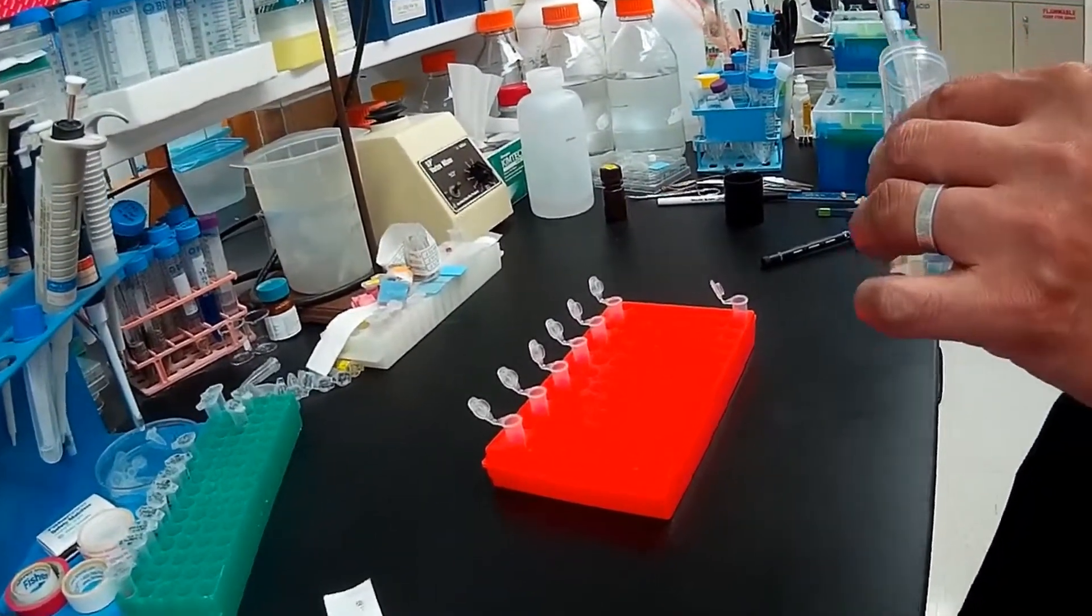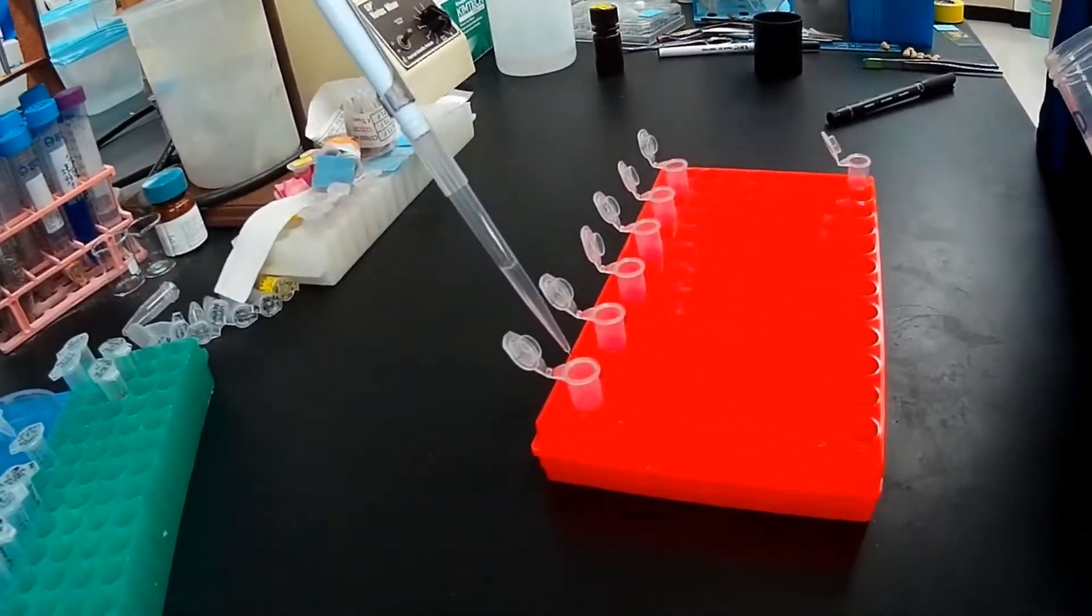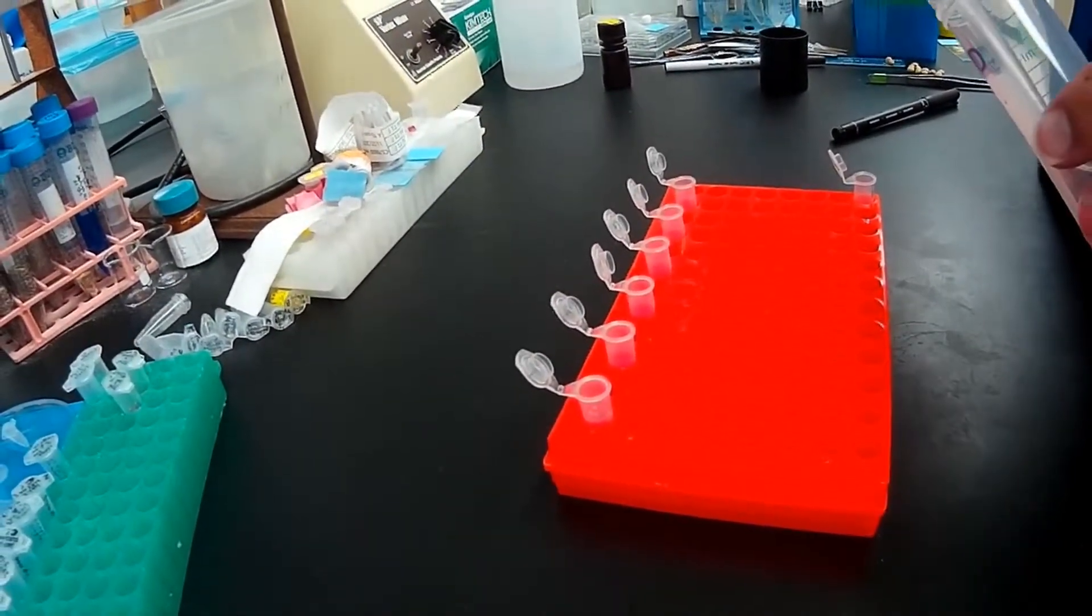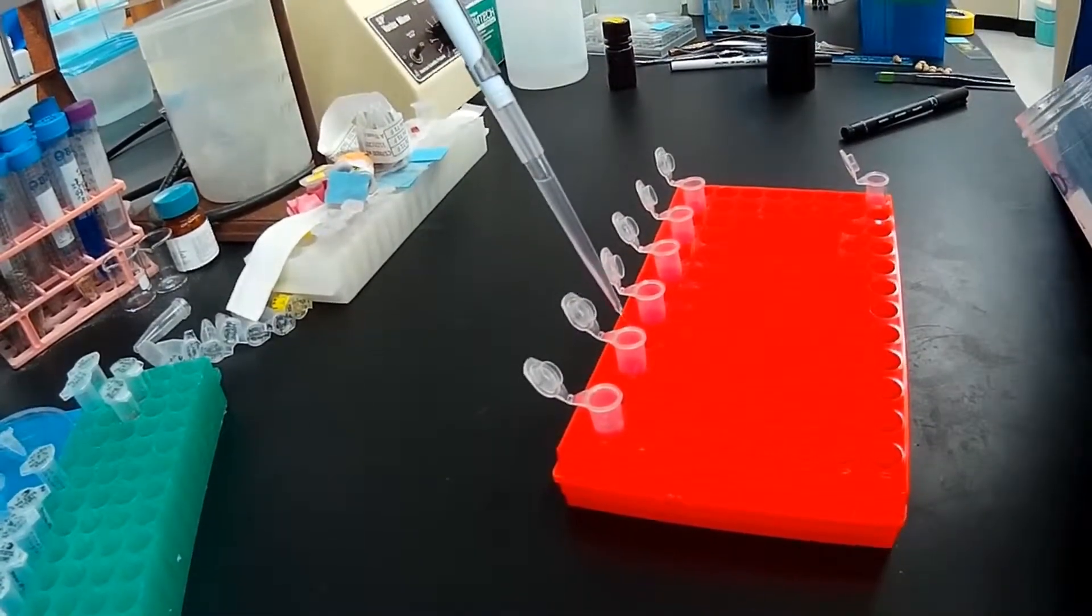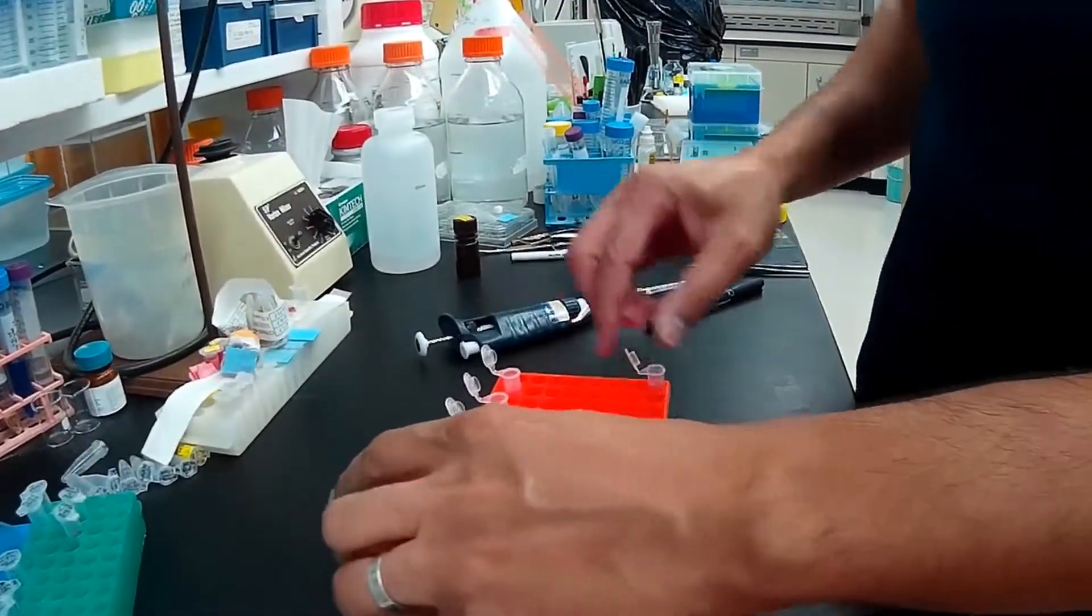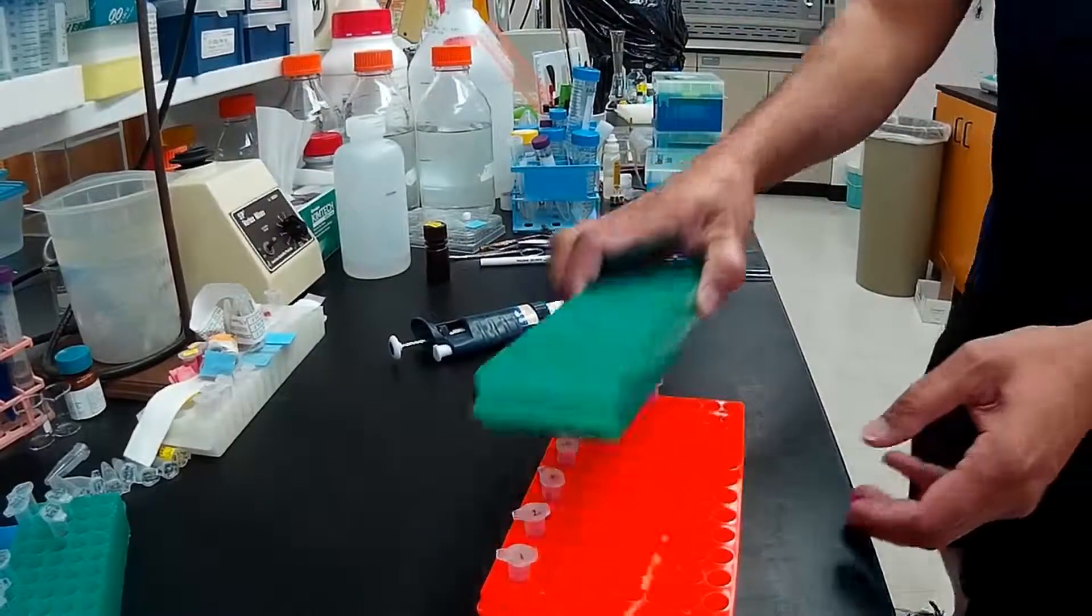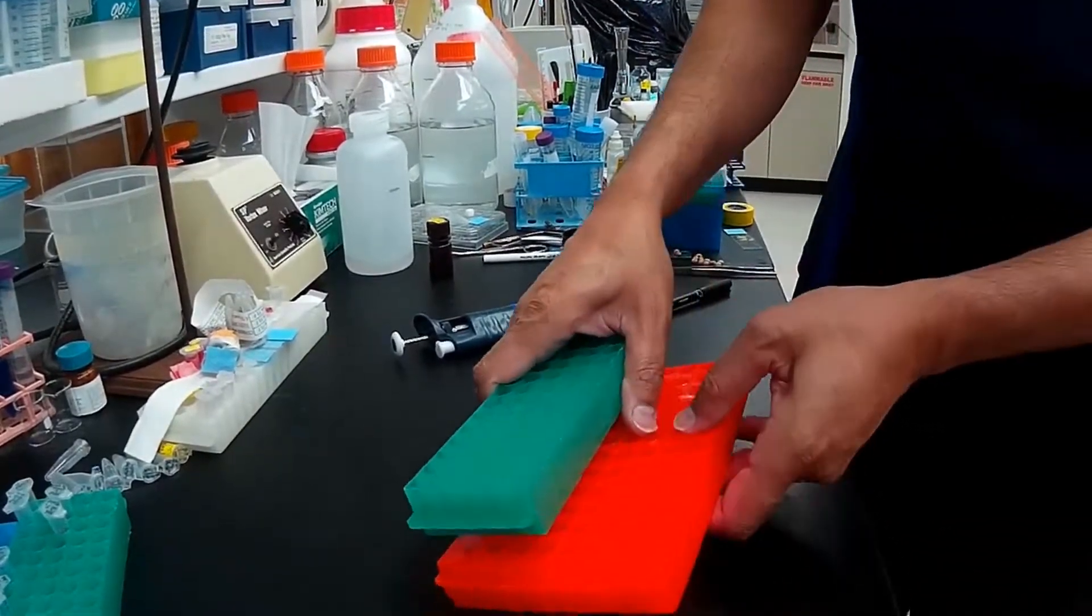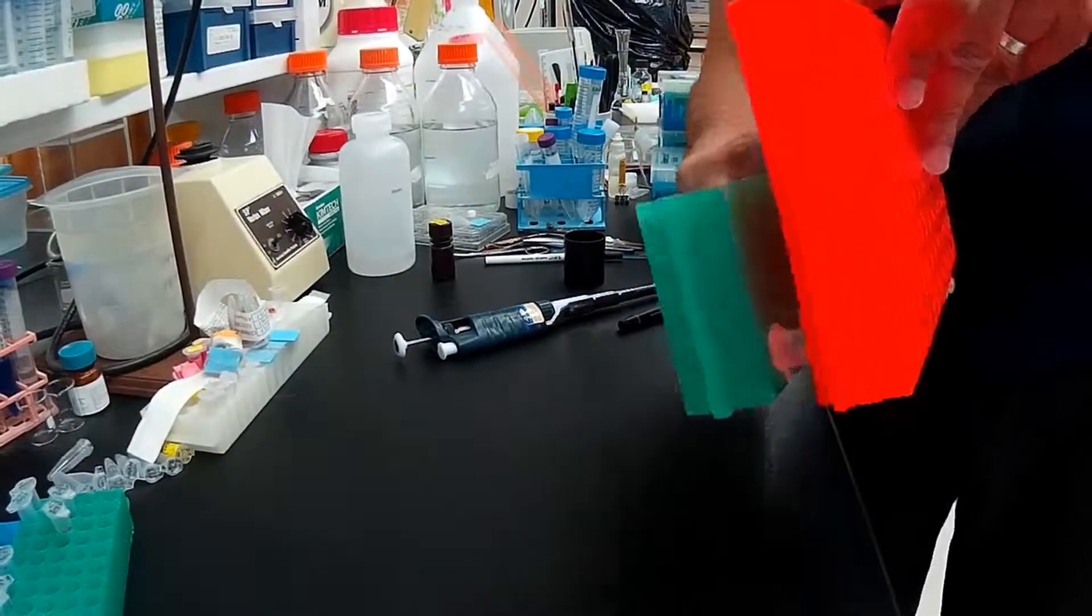Then wash the pellet with 70% ethanol by squirting it on the opposite side of the pellet. Invert our tubes gently a few times. Mix the 70% ethanol there.